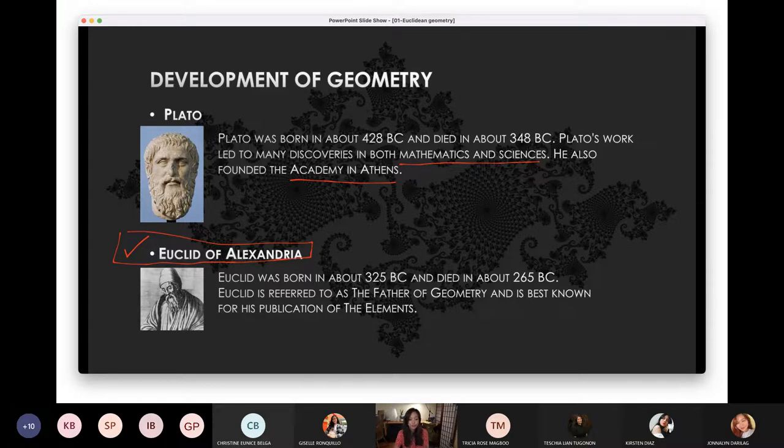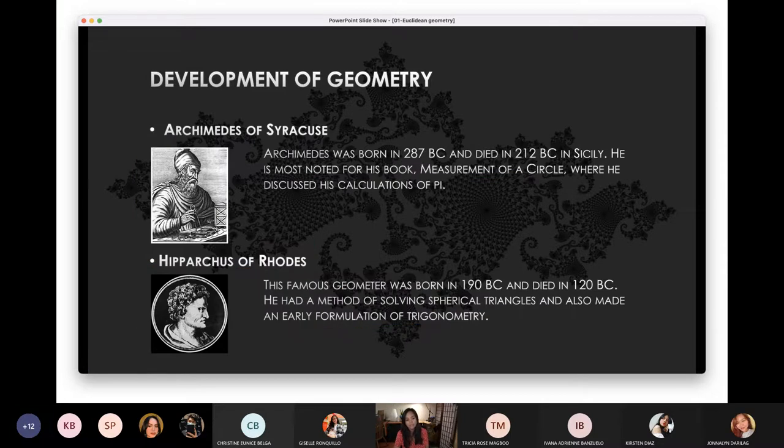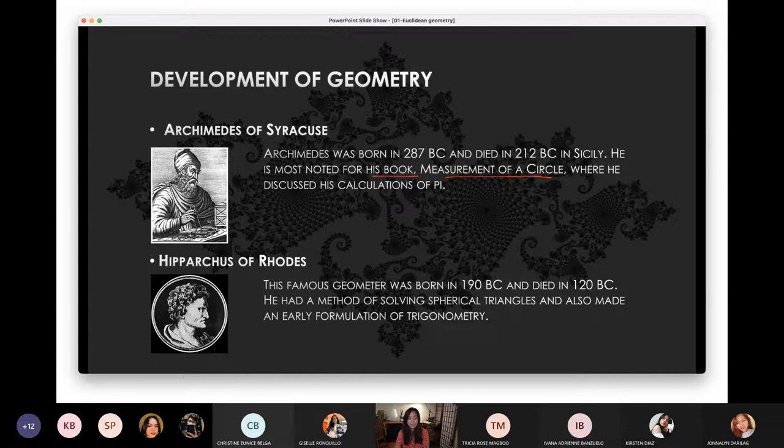So he's the topic today. That's why we have what we call Euclidean geometry. So he's that guy and he's very known with his publication and that is the publication of the Elements. The next one is Archimedes and Hipparchus. So Archimedes, he has a book that talks about the measurement of the circle and how we calculate pi. Pi is approximately 3.14. Archimedes has something to say about that a lot and he wrote it in a book.